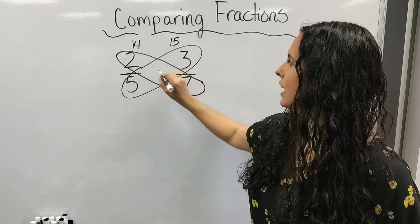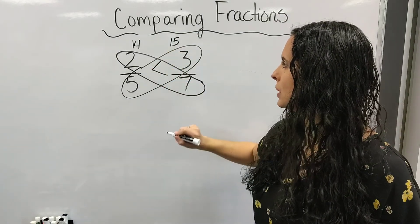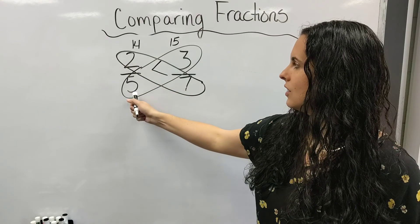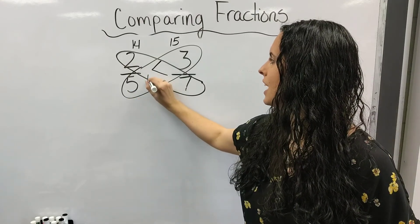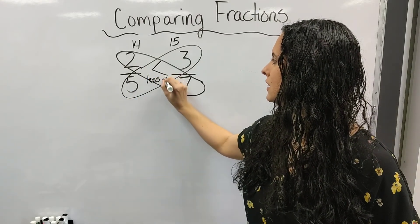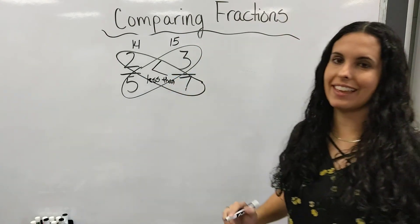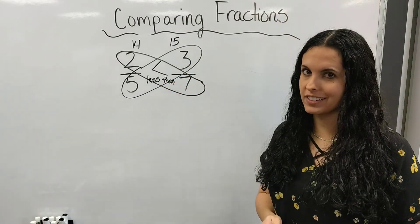So I know that 15 is my larger number. So two-fifths is less than three-sevenths. And that's how you use a butterfly to compare fractions.